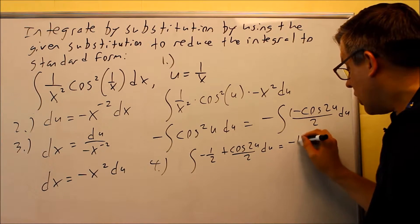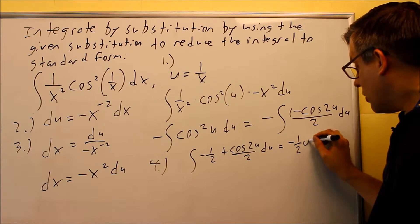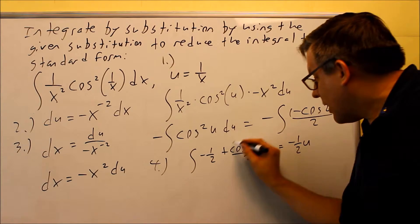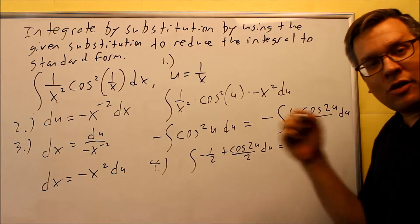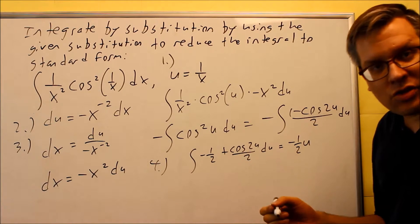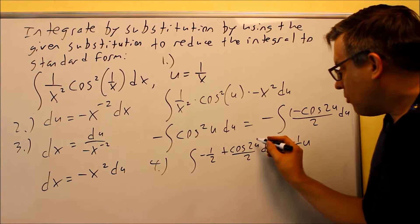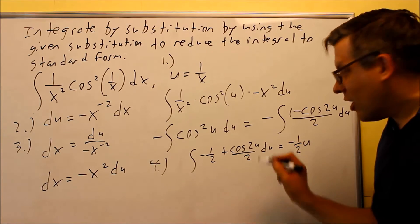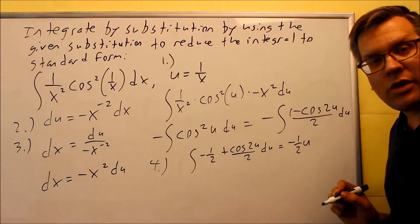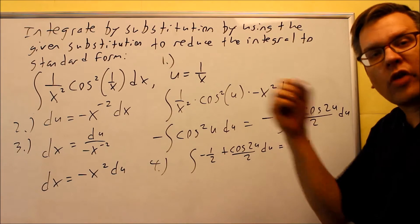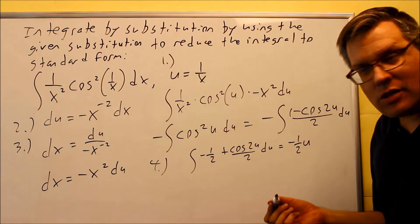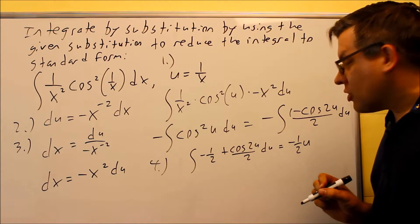When we do that, we get negative 1 half u. Now, when you integrate this one, integral of cosine will take you back to sine, so we have a sine of 2u that's there. But notice that this one has a k value in it, and when we integrate something like that with a k, we get a 1 over k times sine of k times the u. So because of that,